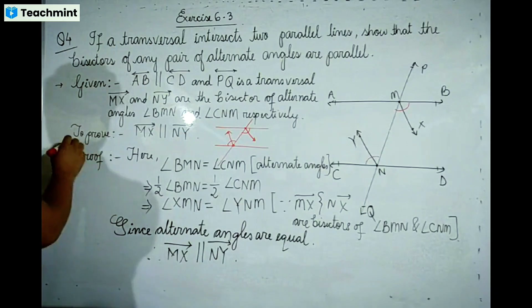The bisector of angle BMN is MX, and the bisector of angle CNM is NY. We need to prove that MX and NY are parallel. MX bisects angle BMN, and NY bisects angle CNM.